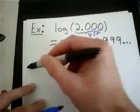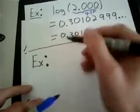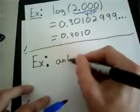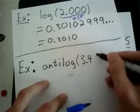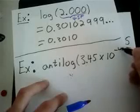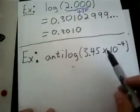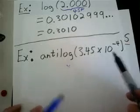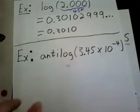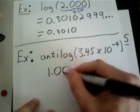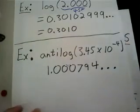Now I'm going to do an example of an anti-logarithm. The anti-logarithm of 3.45 times 10 to the negative 4. Instead of looking at the significant figures of the entire number, we're going to apply that in the opposite direction and focus on the sig figs in the mantissa first. Putting it into a calculator, that's going to give us 1.00794 and it keeps going, but we've already carried it out enough.